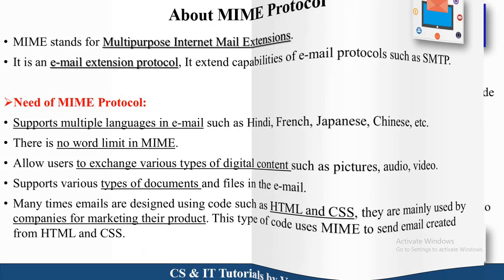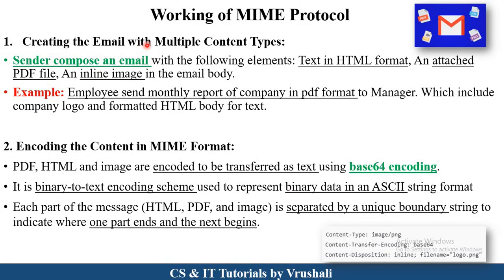Now let's see the working of MIME. The first step is creating the email with multiple content types. Suppose there is an employee and a manager. The employee wants to send a monthly report of the company to the manager. This monthly report is in PDF format. The report also includes the logo of the company, meaning there are images attached. All the information is also stored in text format, so multiple content types are present — that's why MIME protocol is used. The sender composes this in an email and sends it to the MIME server.